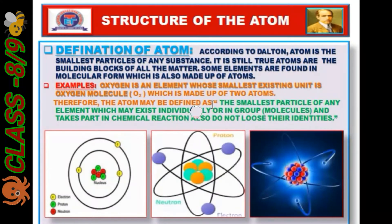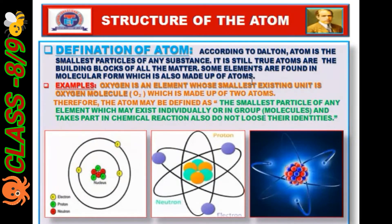According to Dalton, an atom is the smallest particle of any substance. This is still true. Atoms are the building blocks of all matter. Some elements are found in molecular form, which is also made up of atoms. For example, oxygen is an element whose smallest existing unit is the oxygen molecule.